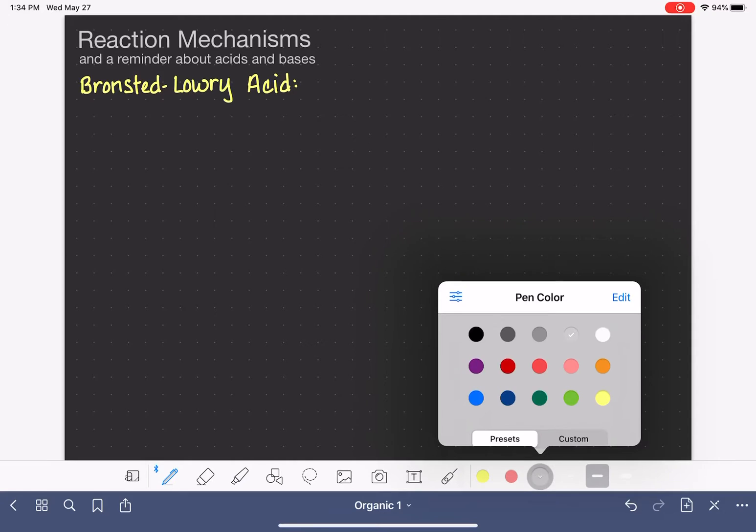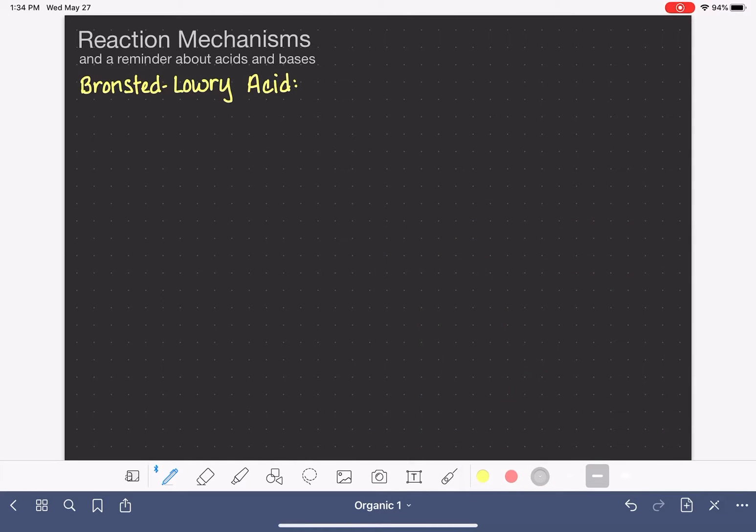A Bronsted-Lowry acid is one that we will define as a proton donor. You may not have used the word proton donor to describe them in general chemistry. Proton is our nickname for the H-plus ion, and it's used in organic all the time and not really used that much in GenChem. So in GenChem, we would say that a Bronsted-Lowry acid is an H-plus donor. In organic chemistry, we would say that it's a proton donor because proton is our nickname for H-plus.